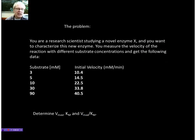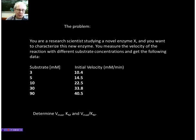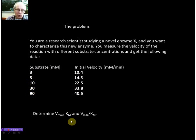So here's the problem. You are a research scientist, and you study an enzyme, and you want to characterize it a little bit further. To do so, you measure initial velocities in an enzyme reaction at different substrate concentrations. And what you want to know is what is my Vmax, or in other words, how does this enzyme behave when the substrate concentration is very high?